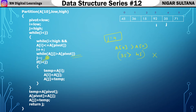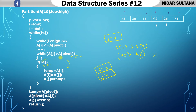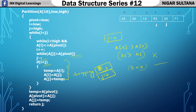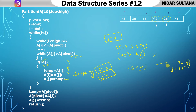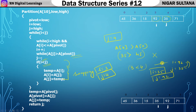Since the j condition is false, check the if condition: is i=3 less than j=4? Yes — this is true, so we swap. The value at i is 92 and the value at j is 35. After swapping, index 3 holds 35 and index 4 holds 92.